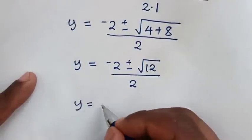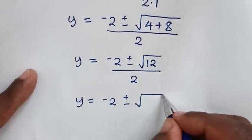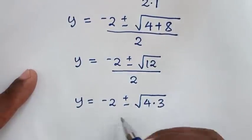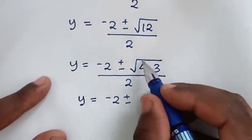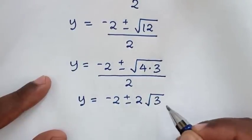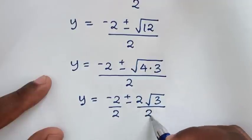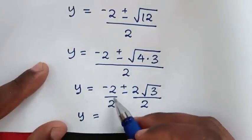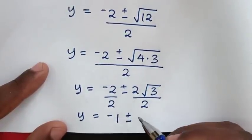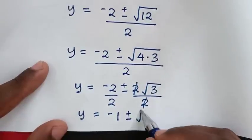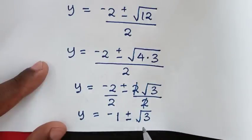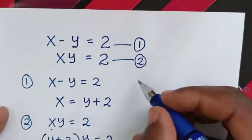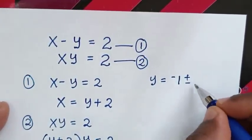Then y equals negative 2 plus or minus square root of 12, which is the same as square root of 4 times 3, over 2. So y equals negative 2 plus or minus — square root of 4 is 2, times square root of 3 — over 2. Dividing through by 2: negative 2 over 2 is negative 1, and the 2 in the numerator and denominator cancel, giving y equals negative 1 plus or minus square root of 3.